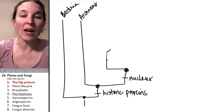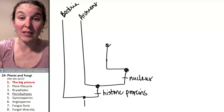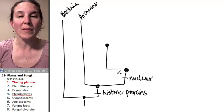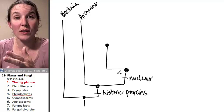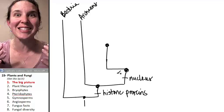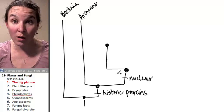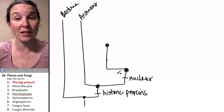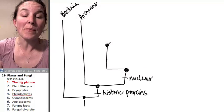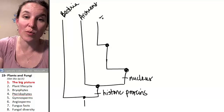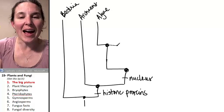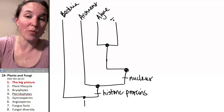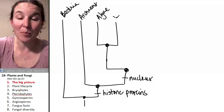We talked about how protists are single-celled eukaryotes and that there are protists interspersed. There are sister protist groups to all of our main classes of eukaryotes and one of the sister protist groups is algae. And algae is the sister protist group to land plants.